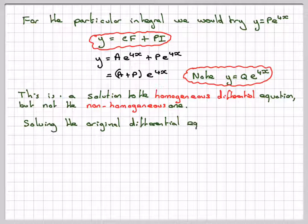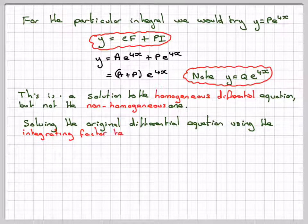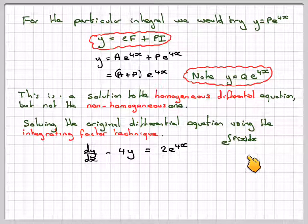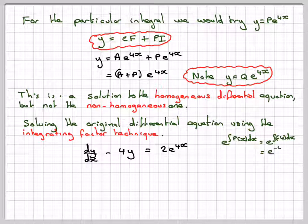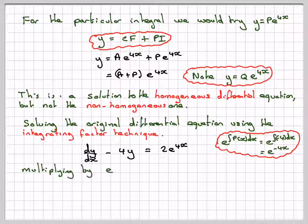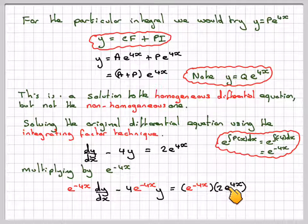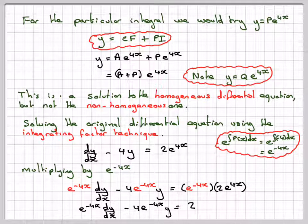So if we now look at the original differential equation using the integrating factor technique: dy/dx minus 4y equals 2e to the 4x. The integrating factor will be e to the integral of p(x) dx, which is e to the integral of minus 4 dx, giving e to the minus 4x. Multiplying everything through by e to the minus 4x, we get e to the minus 4x times dy/dx minus 4e to the minus 4x times y equals e to the minus 4x times 2e to the 4x, which simplifies to 2.